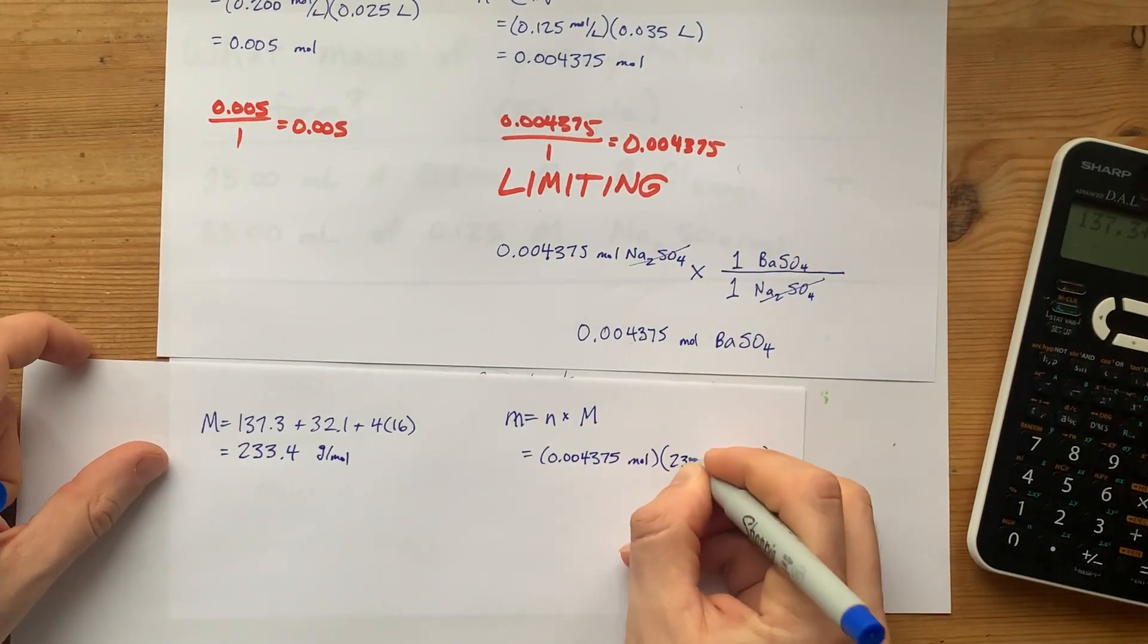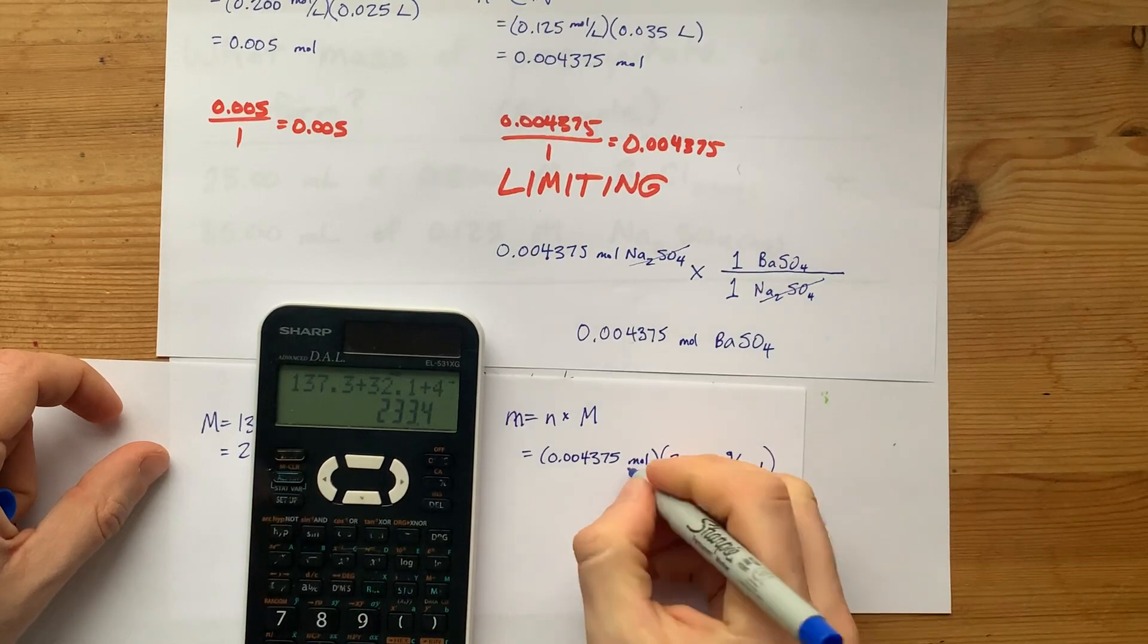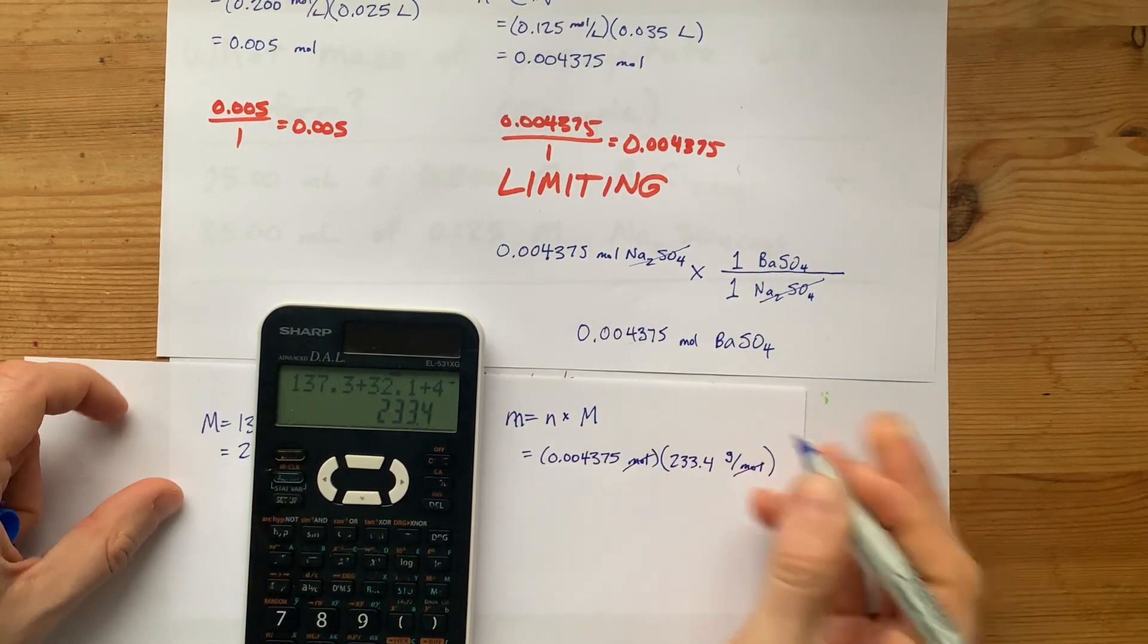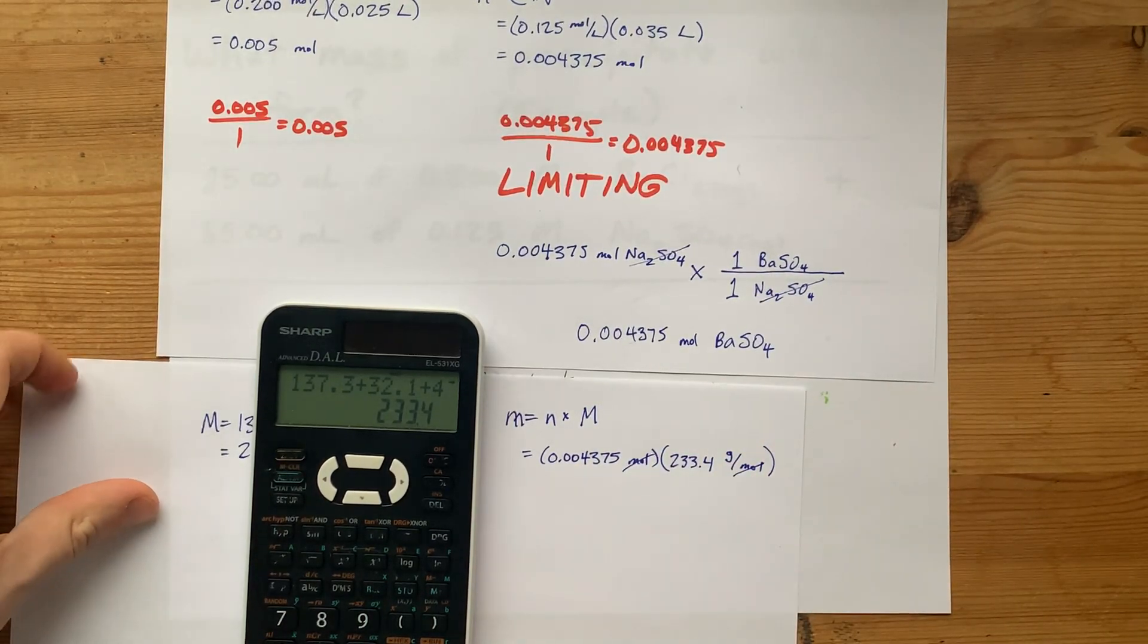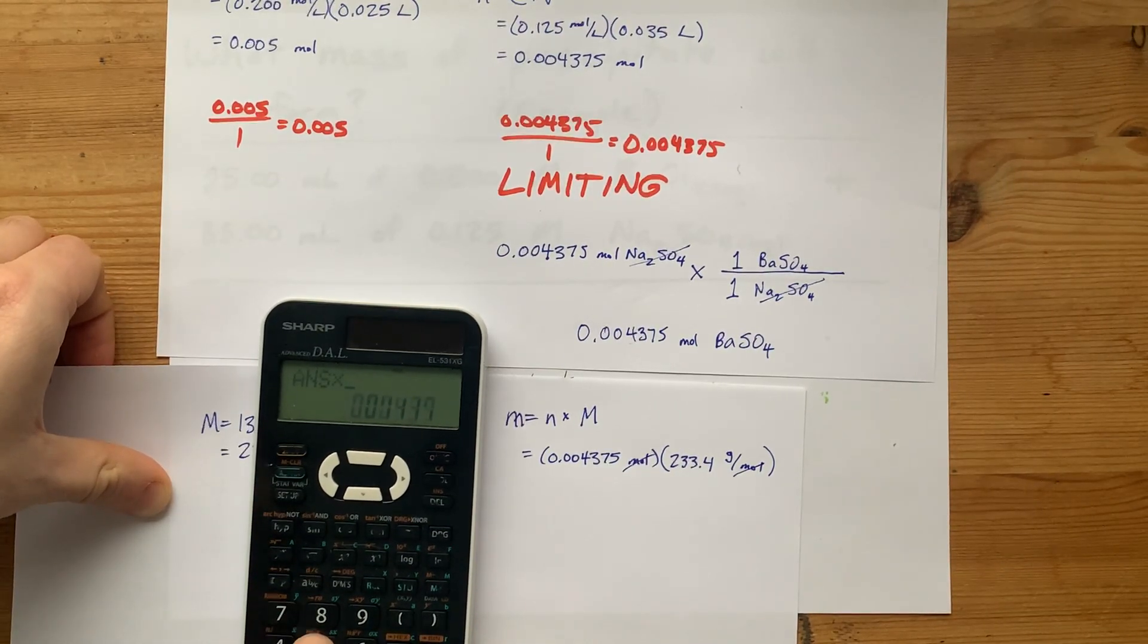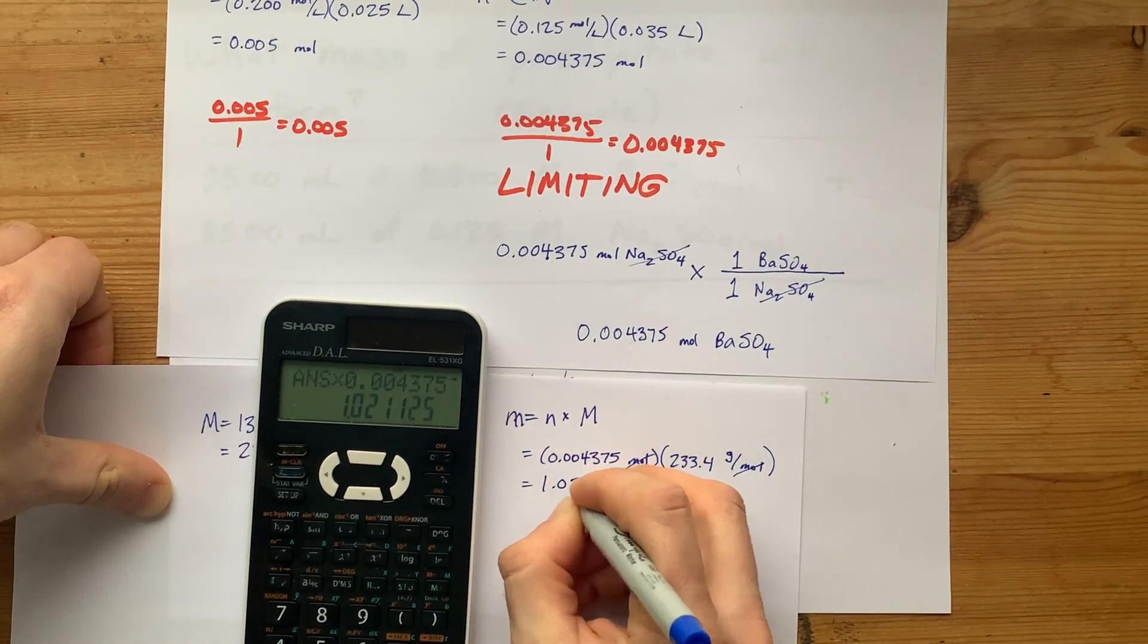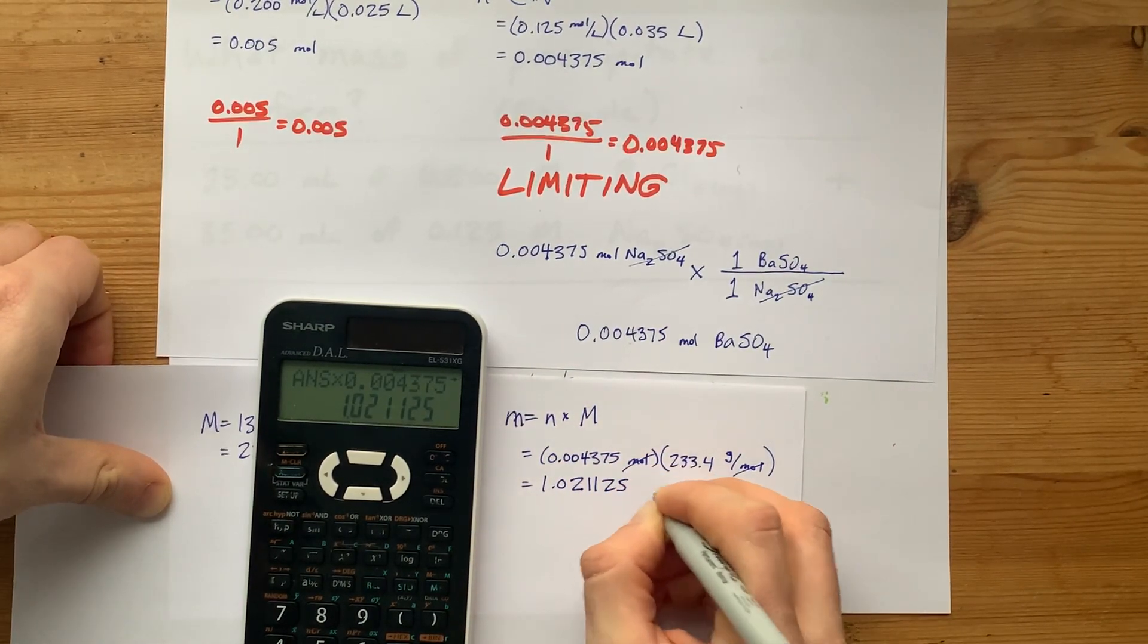I'm going to put that in here, and then I can do the multiplication. The moles will cancel it, and I'm going to be left with my answer in grams. Hallelujah. Times 0.004375, I end up with 1.021125 grams.